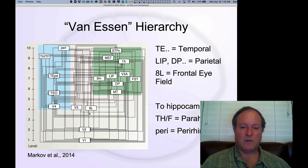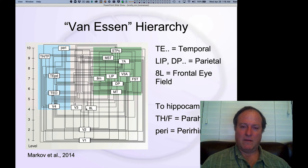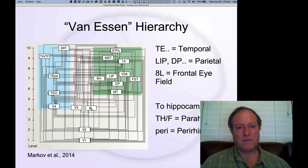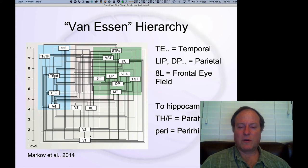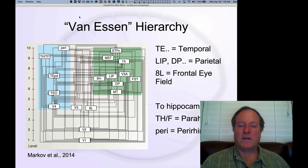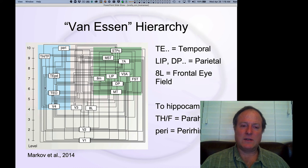One notable addition in this more recent update is that frontal area 8L — the frontal eye fields in frontal cortex — is hierarchically organized and placed way down at the very lowest levels of the visual hierarchy. That may be very important for guiding visual attention and directing visual saccades based on low-level topographically mapped information. The hierarchy sometimes places areas in different positions relative to their actual anatomical location in the brain, and the very highest levels feed into the hippocampus and prefrontal cortex.